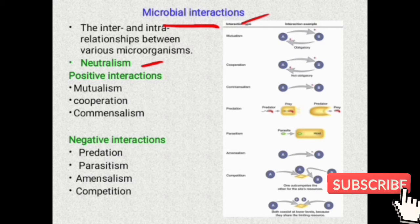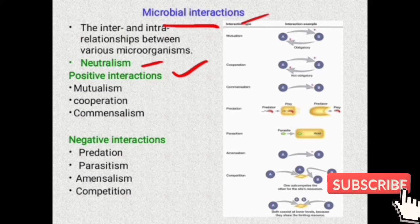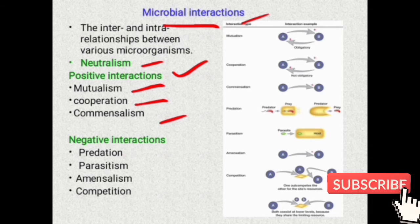Sometimes organisms get benefit from interactions, which we call positive interactions. For example, Lactobacillus, which is present in our gut, provides a healthy impact on our health. This is an example of positive interaction. Positive interactions include mutualism, cooperation, and commensalism.